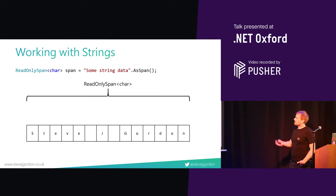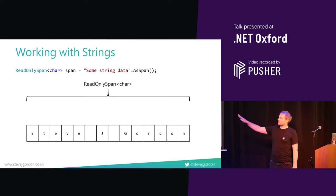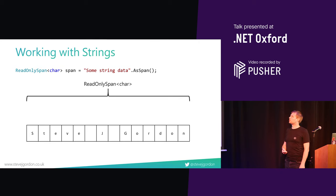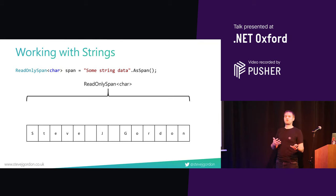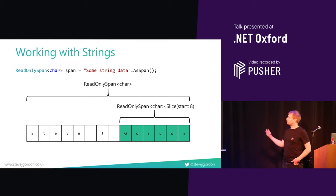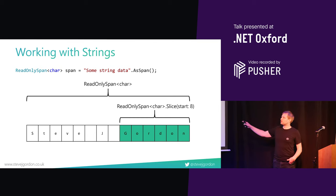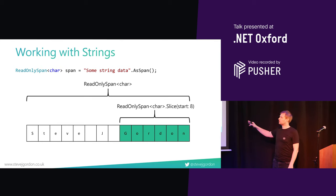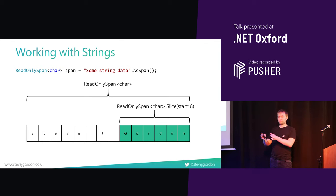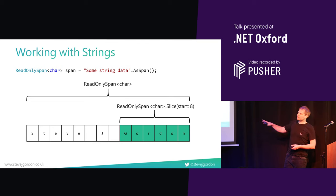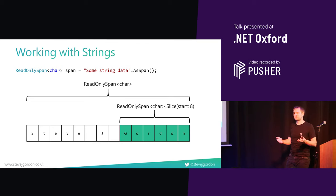We can also work with strings. You can use a string literal or a reference to a string and just call AsSpan on it. This time you'll get a ReadOnlySpan of characters — read-only because we can't change a string. Once we've got that ReadOnlySpan, we can do the same kind of operations to view different portions of it — we can parse that string with no allocations and no cost. So we could do a slice starting at a particular position to get a surname. If we've found the index of the last space and need to know the portion that represents a name, we can slice in for the appropriate position. If you were parsing a large text file, these things start to add up and become much more relevant.